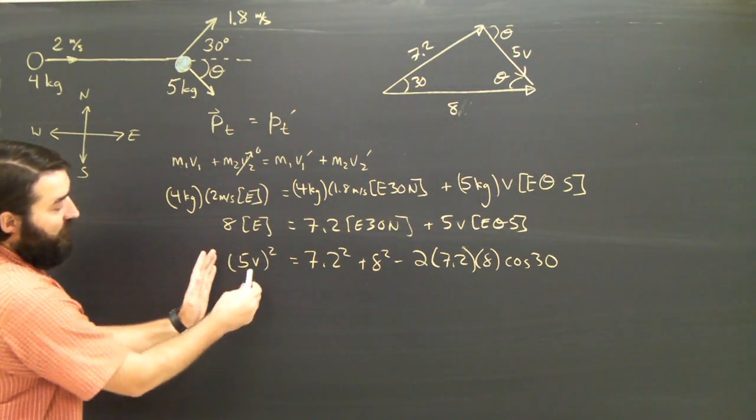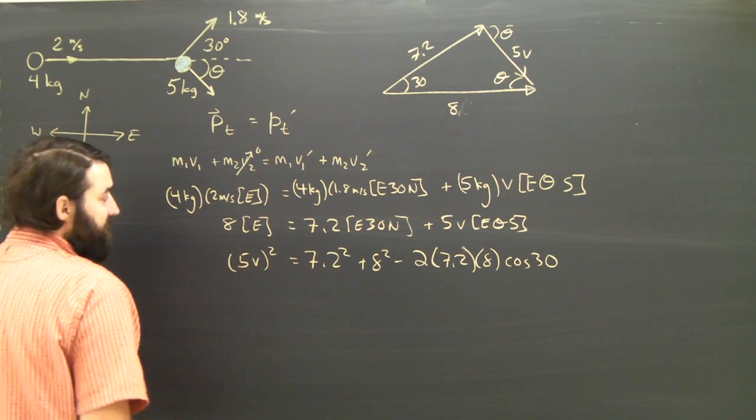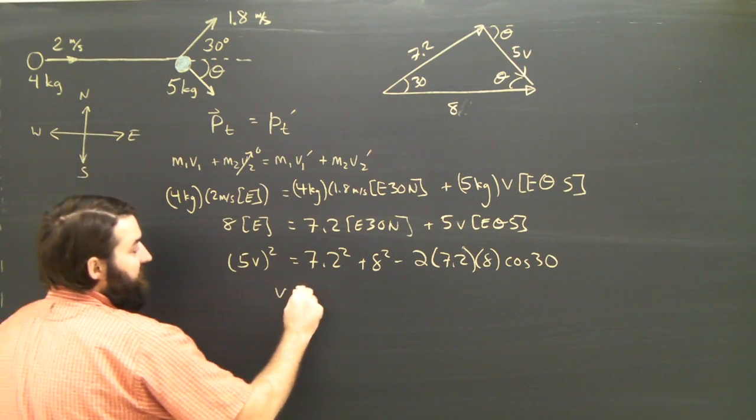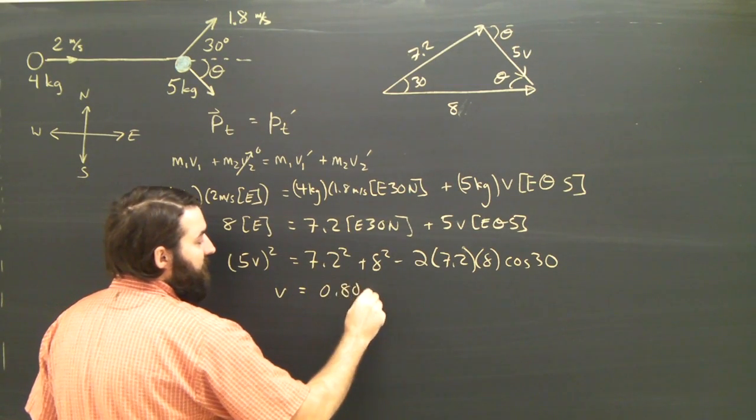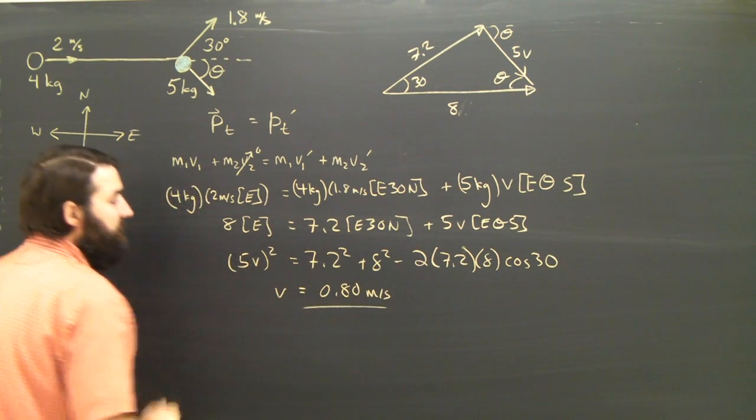Simplifying, rearranging, remembering to square the 5 because it's inside the brackets here. And I eventually will get a velocity of 0.80 meters per second.